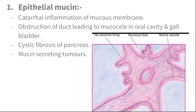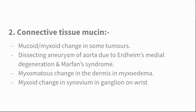The image shows mucin-secreting tumor of the ovary — you can see the mucin fluid, mucus vacuoles, and tall columnar lining. The second type of mucoid change is connective tissue mucin. Examples include: mucoid or myxoid change in some tumors, and dissecting aneurysm of the aorta due to Erdheim's medial degeneration and Marfan syndrome. Marfan syndrome is a familial connective tissue disorder. In a dissecting aneurysm, the inner layers of the aorta are damaged or tear.